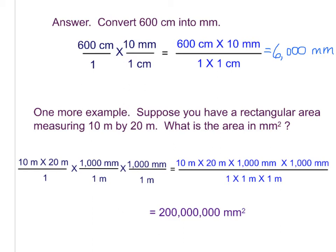One more example. Let's suppose you have a rectangular area measuring 10 meters by 20 meters. What is the area in millimeters squared? Sounds like a hard problem, but it really isn't. We're just going to use a lot of dimensional analysis. We have a rectangular area and it's 10 meters by 20 meters. So we write that down, 10 meters times 20 meters. I know that I would like to convert these meters into millimeters because I'm going to want to find millimeters squared in the end.